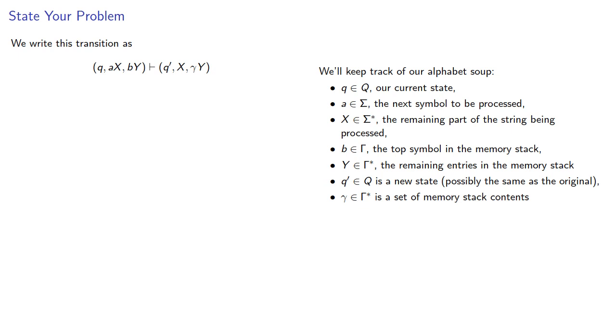And we'll write the transition this way, and we'll read this as (q, ax, bγ) derives (q', x, γγ) in one step.